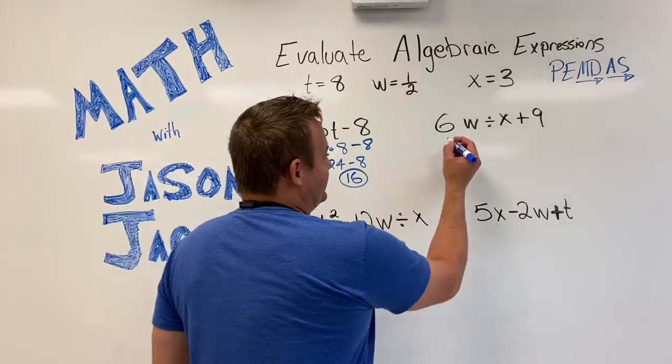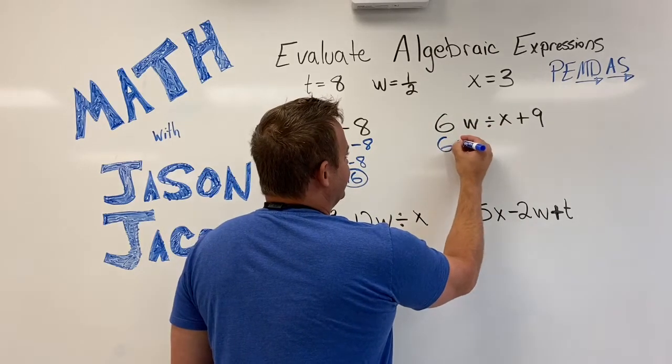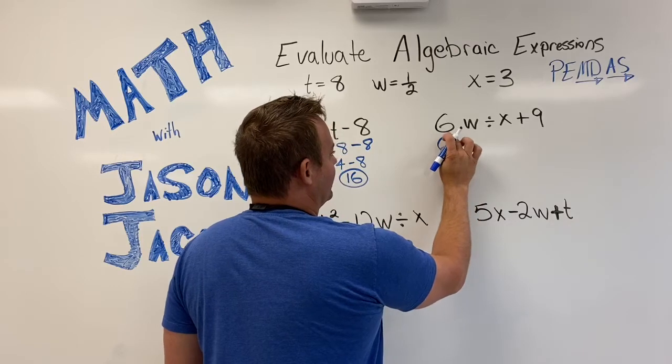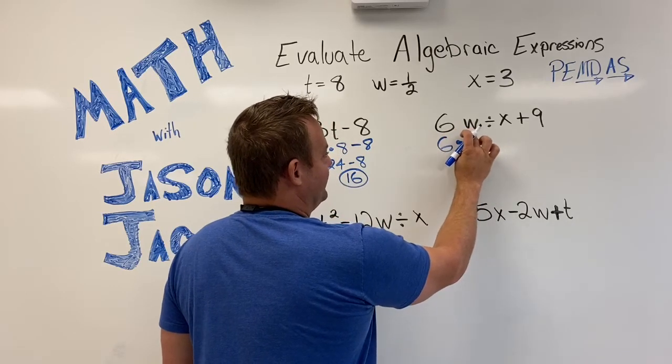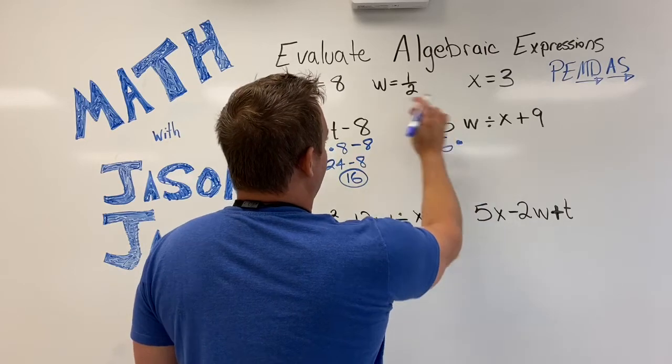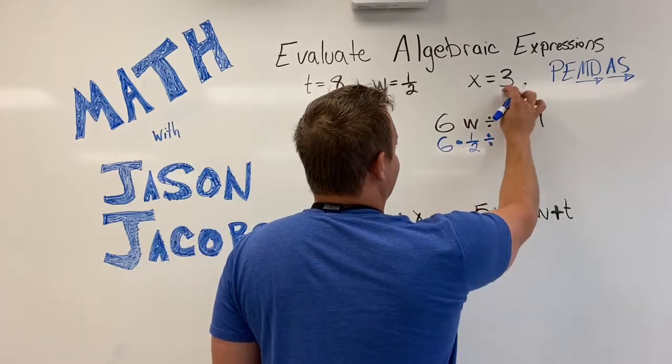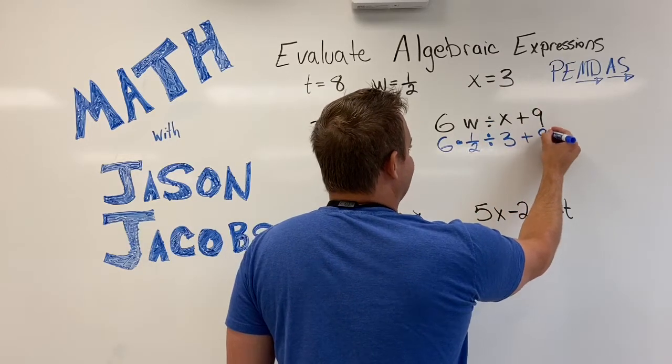So we're going to substitute these values in for w and x. So 6 times, when the coefficient is next to the variable, that means you multiply, 6 times, what is w? A half. So 6 times a half. Divided by x. x is 3. Plus 9.